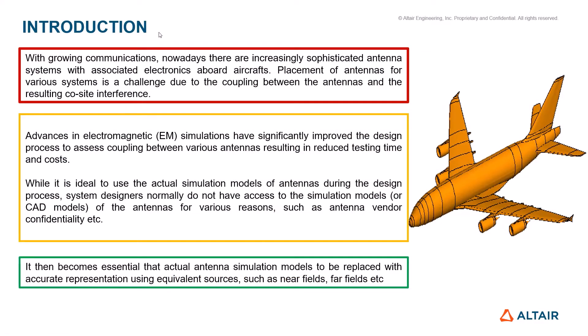With growing communications nowadays, there are increasingly sophisticated antenna systems based on various platforms — aircraft, automobile vehicles, ships, and more. A lot of antennas are coming onto these platforms and one needs to place them carefully. It's a challenge to study the coupling between these antennas and the resulting co-site interference. Advances in electromagnetic simulations help assess the coupling between various antennas, reducing testing time and costs.